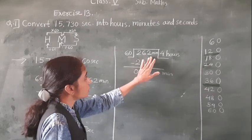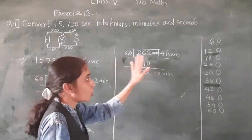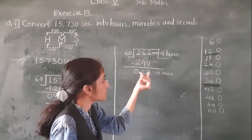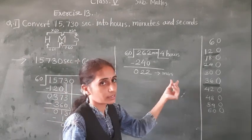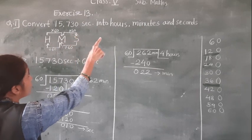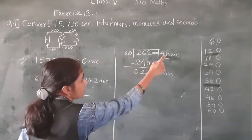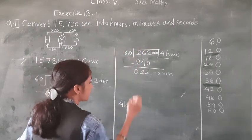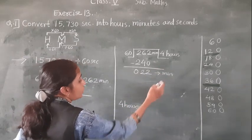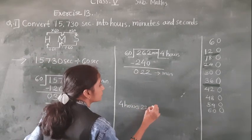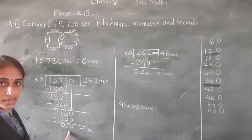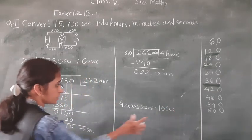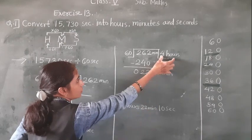For 262 minutes we divided by 60 minutes — we got hours. And the remainder is the minutes. So what is our answer? 4 hours, 22 minutes, 10 seconds. It is asked in hours, minutes and seconds — so 4 hours, 22 minutes, 10 seconds.